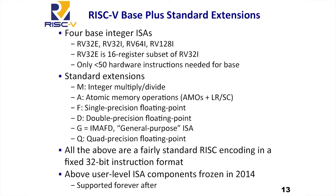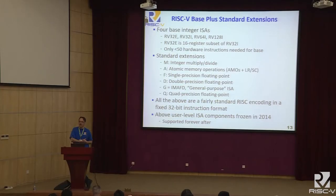RISC-V has the model of having a base plus standard extensions. There are actually four base integer instruction sets, basically separated by address space width. RV32 is a 32-bit address space, RV64 is 64-bit, RV128 is 128-bit, and RV32E is a variant of the 32-bit version with only 16 registers, for very small microcontrollers. When we first put the 128-bit one in the spec, we almost did it as a joke — look, we can do 128 bits too, nobody's really going to need this. But as we went around talking to various companies, it became clear there was actually some serious interest in the 128-bit address space, coming from data centers.